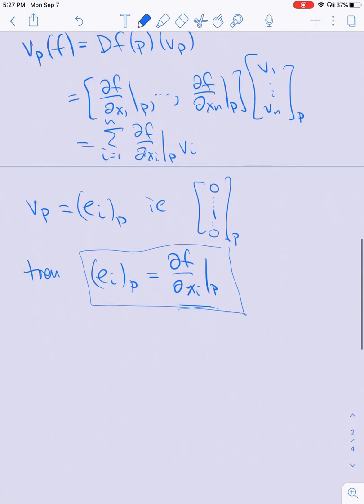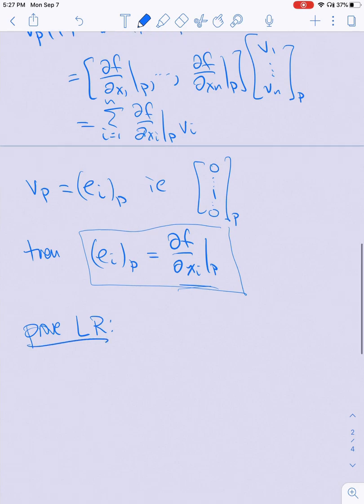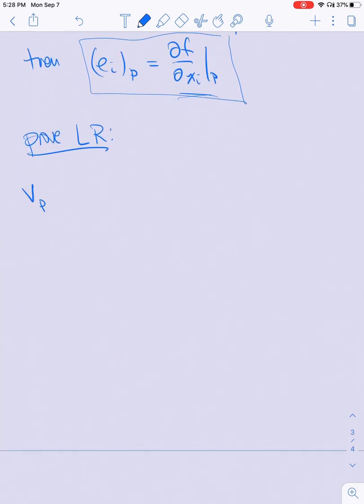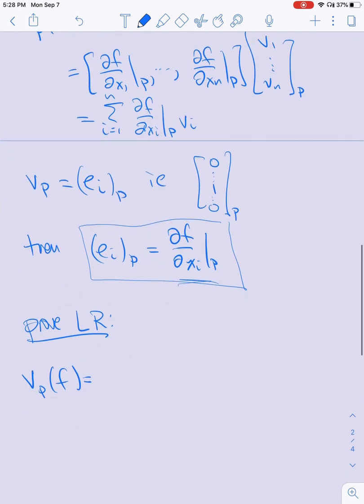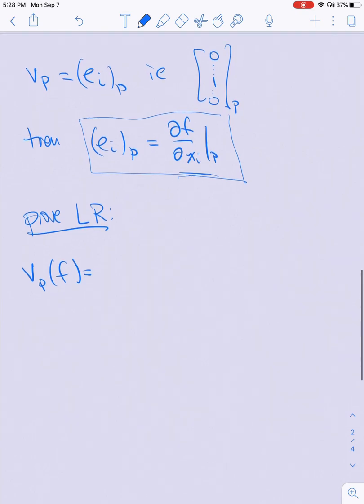Let's take v at p applied to fg. This is equal to the sum from i=1 to n of d(fg)/dx_i at p times v_i.